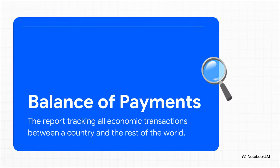The official tool that does all this tracking is called the balance of payments. The best way to think of it is as a country's official financial scorecard with the rest of the world — one giant, comprehensive statement of all the money that flowed in and all the money that flowed out. At its core, this report is just a simple accounting ledger with two columns: credits for any transaction that brings money into the country, and debits for any transaction that sends money out. Every single international transaction falls into one of these two buckets.